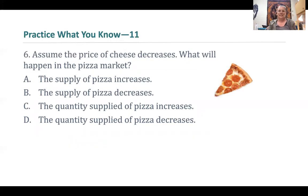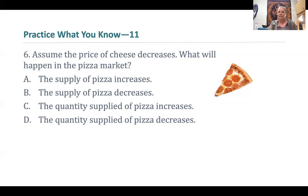Let's practice. Assume the price of cheese decreases — what will happen in the market for pizza? Cheese is an input to making pizza, so if cheese gets cheaper, it's now cheaper to produce our end product. We'll be incentivized to produce more of it at every price, therefore the supply of pizza increases.